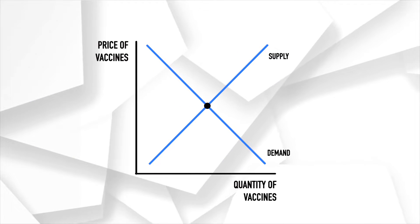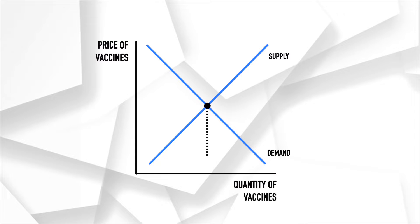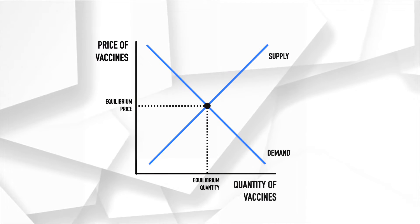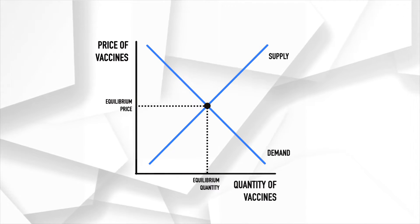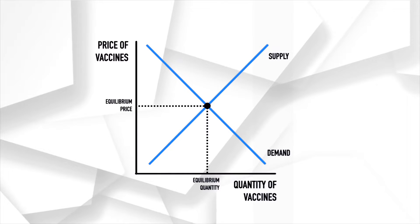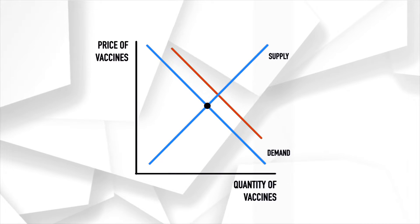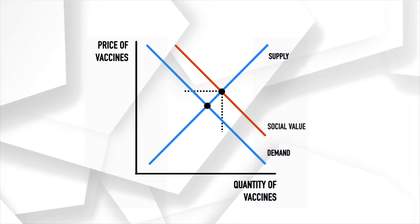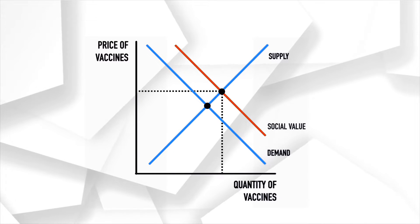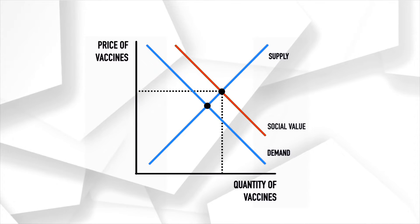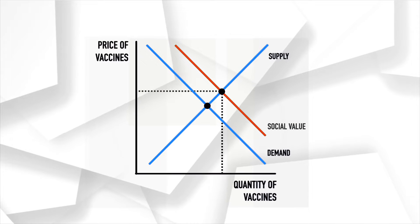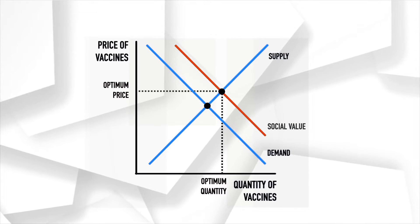The intersection of the two curves determines the market equilibrium, where quantity demanded equals quantity supplied. In the presence of a positive externality, the social value of the good exceeds the private value. The optimal quantity is therefore larger than the equilibrium quantity. The social value curve is above the demand curve, and the intersection between this curve and the supply curve is the new optimal quantity that should be produced and consumed.